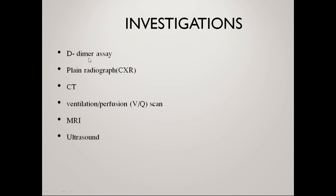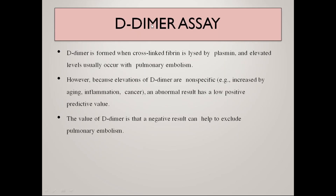Coming to investigations: D-dimer assay, plain radiograph, CT, ventilation perfusion scan, MRA, and ultrasound are the investigations. D-dimer is formed when cross-linked fibrin is lysed by plasmin, and elevated levels usually occur with pulmonary embolism. However, elevations of D-dimer are non-specific and are increased by aging, inflammation, and cancer, so an abnormal result has a low positive predictive value. The value of D-dimer is that a negative result can help to exclude pulmonary embolism — it only has negative predictive value. If D-dimer is positive, it is not exclusively due to pulmonary thromboembolism as there are many other causes.